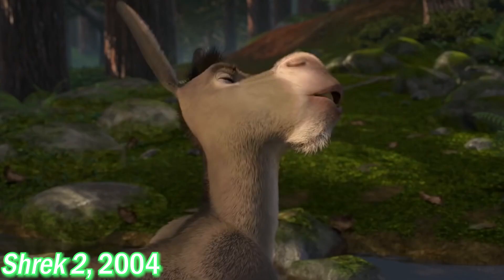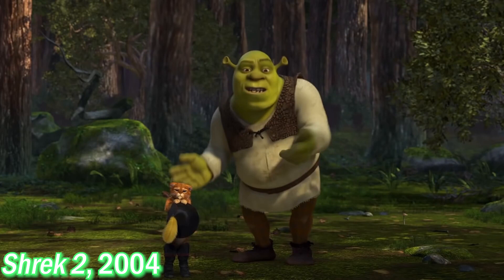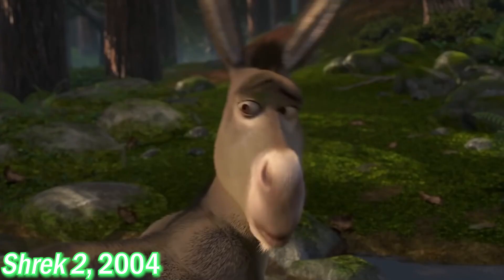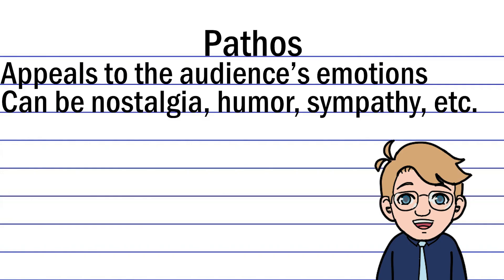Popular examples of pathos appeals are those commercials that try to get you to adopt puppies by showing you black and white clips of cute puppies with sad music in the background, because they're trying to play on your emotions and make you want to give these dogs a new home because you feel bad for them.